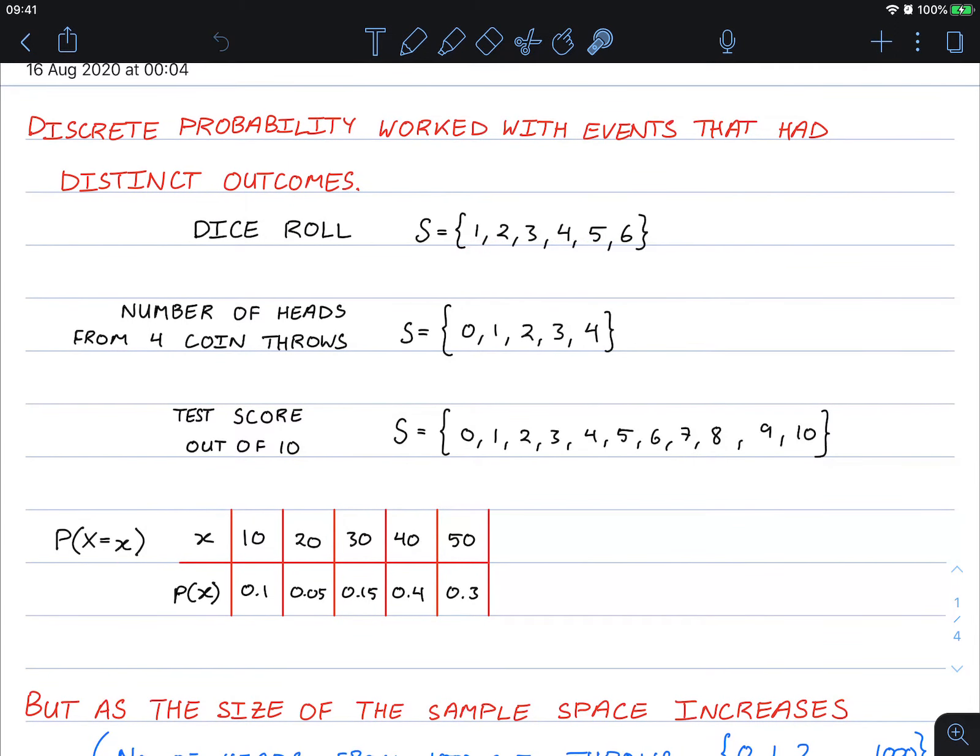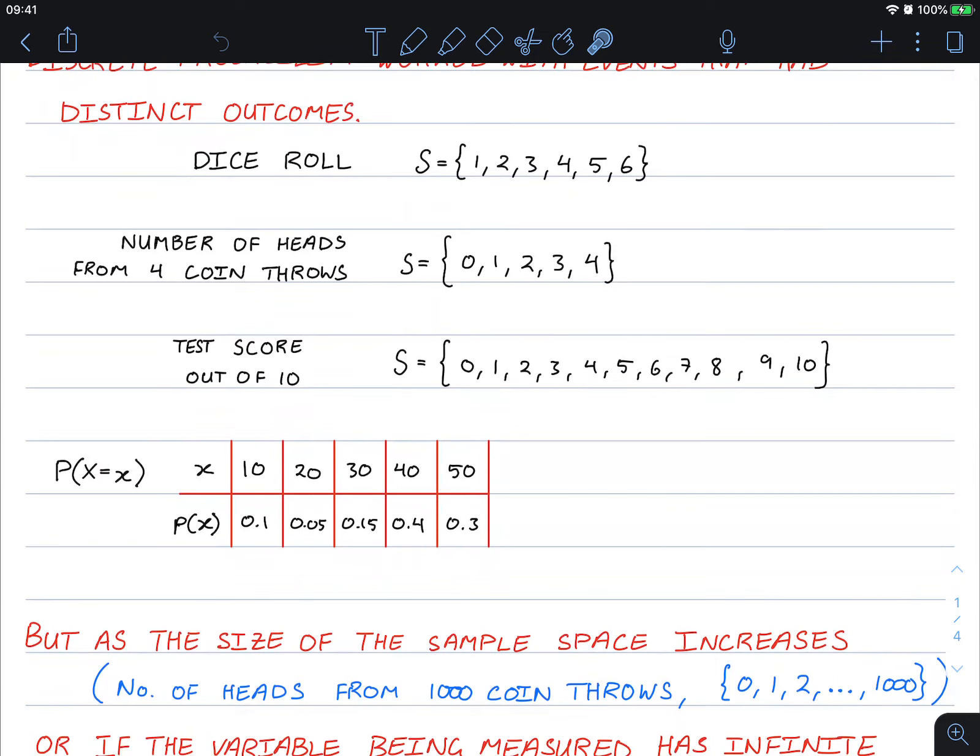For throwing heads from four coins, you can get zero heads in the four throws, one head in the four throws, two, three, or all four coins to be heads.